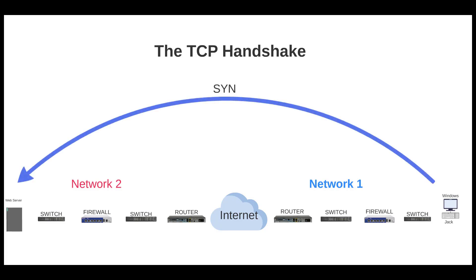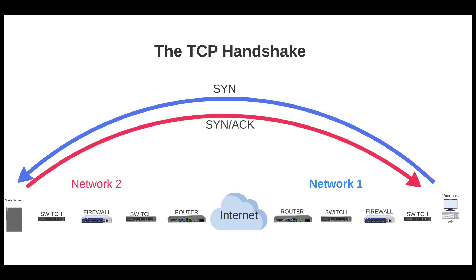Once the destination web server receives this packet, it recognizes it got a SYN packet from Jack's machine on the internet, and that machine wants to make a connection. So the web server sends back a message stating that it acknowledges the SYN packet and also wants to send a SYN packet of its own back as well.